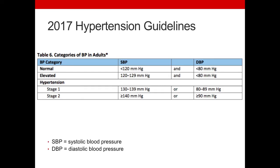This new definition of hypertension will result in nearly half of the U.S. adult population — about 46 percent — being classified as having high blood pressure, and this is expected to have the greatest impact among younger individuals. The prevalence of high blood pressure is expected to triple among men under age 45 and double among women under age 45.